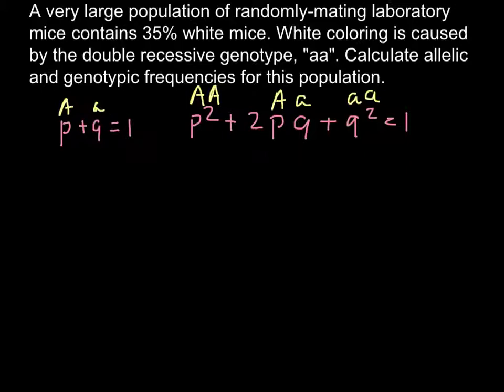As you see, we have three genotypes here but only two phenotypes. These two genotypes (p² and 2pq) would produce black mice, and this genotype (q²) would produce white mice. White mice can only be homozygous recessive.